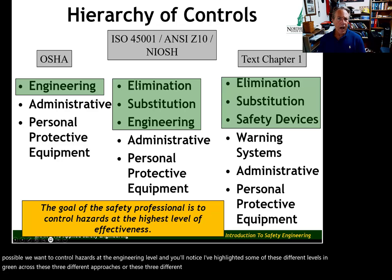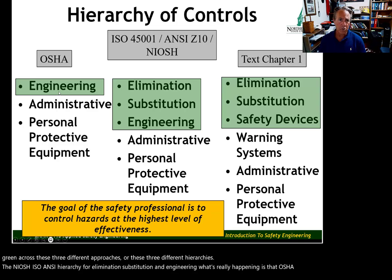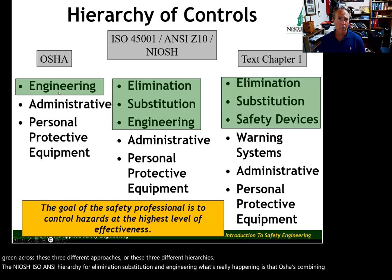The NIOSH/ISO/ANSI hierarchy covers elimination, substitution, and engineering. What's really happening is that OSHA is combining those three under the single umbrella of an engineering control.